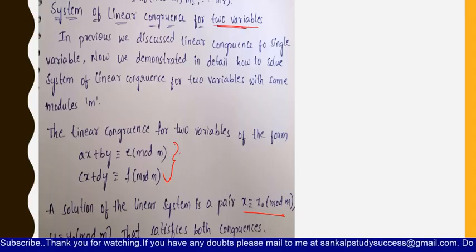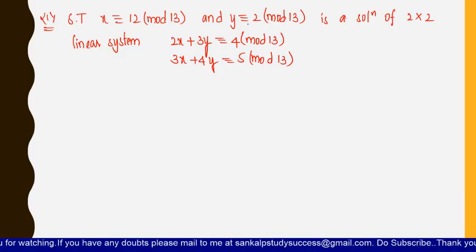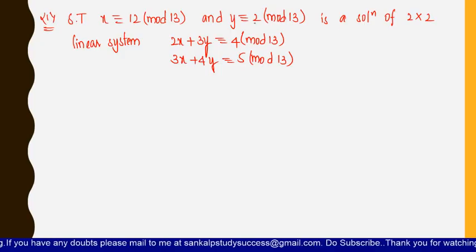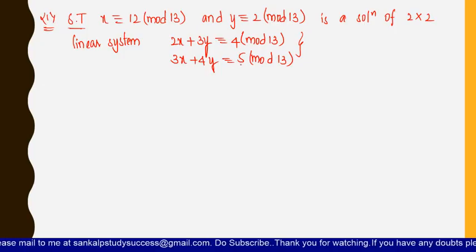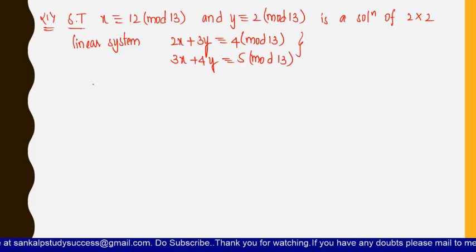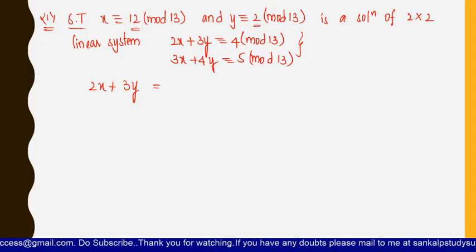Let us see an example. It is given that x ≡ 12 (mod 13) and y ≡ 2 (mod 13). We are already given with the equations and these solutions, and we need to prove whether these are the solutions of the given equations or not. What we do is substitute: in the expression 2x + 3y, we put 12 in place of x and 2 in place of y, since these are the proposed solutions.